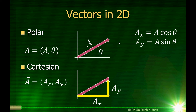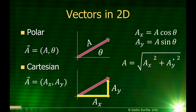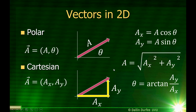Likewise, if I know the x and y components — the vector in Cartesian coordinates — I can convert to polar. The length of the vector is just the square root of Ax squared plus Ay squared. I'm just using the Pythagorean theorem, because the two components of my vector form a triangle, and the length of the hypotenuse comes from the Pythagorean theorem. To find the angle, I use trigonometry: theta is the inverse tangent of Ay over Ax. If you've watched the trigonometry video, you'll know we have to make sure the answer is in the correct quadrant, and if it's not, we add or subtract 180 degrees.